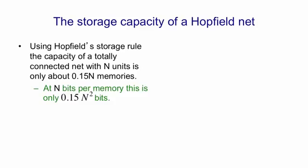Each memory is a random configuration of the n units, so it has n bits of information in it. And so the total information being stored in a Hopfield net is about 0.15n squared bits.